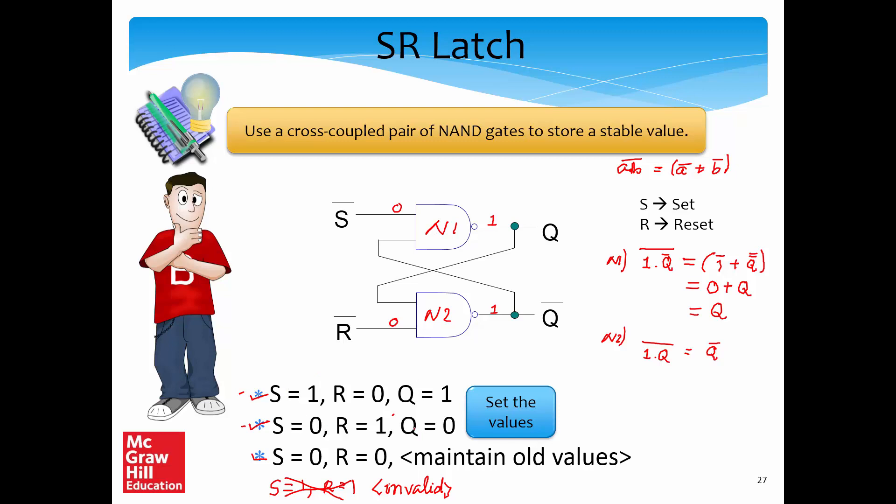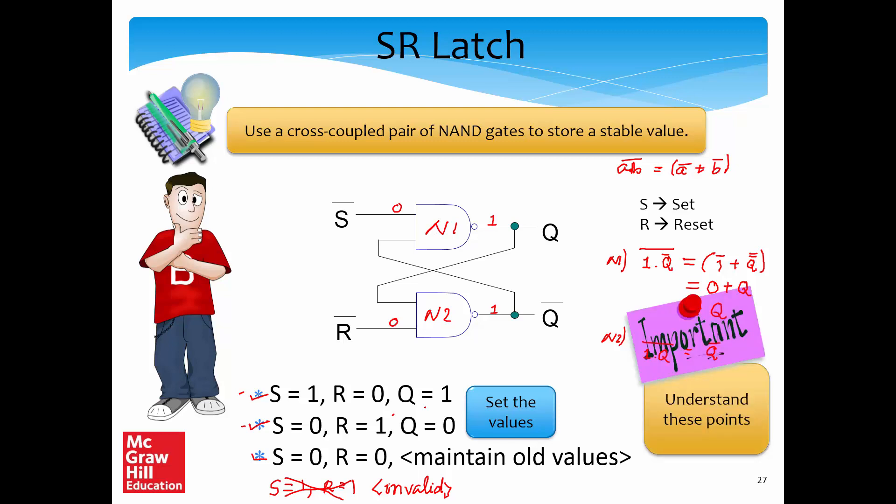We will not consider the S=1, R=1 input at all — only the top three inputs. What the top three inputs tell us is that we have a way of setting the latch, resetting the latch, and maintaining the value. For S and R there are only four combinations: 0-0, 0-1, 1-0, and 1-1. Work out all four results and convince yourself: if S=1, we set the value; if R=1 and S=0, we reset; otherwise, we maintain.